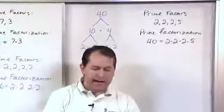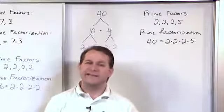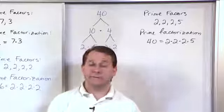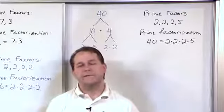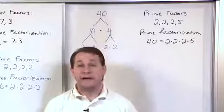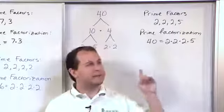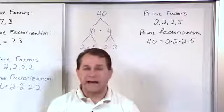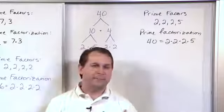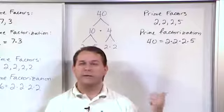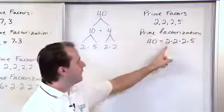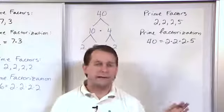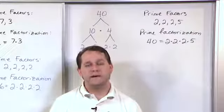That is the end of what we call prime factorization. It's a skill that comes up a lot, mostly because in fractions we're constantly finding factors to simplify fractions and find common denominators. The easiest way to find prime factors is to do this factor tree — choose any numbers that multiply together to give your number, keep breaking them down until you reach the simplest numbers at the bottom, which are prime numbers. Those numbers at the bottom are the prime factors, and when you multiply all of them together, that's called the prime factorization. For 40: 2 times 2 is 4, times 2 is 8, times 5 is 40.